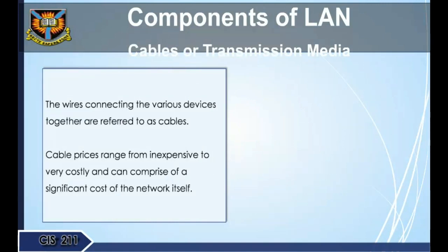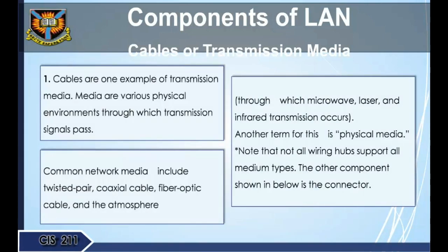The wires connecting the various devices together are referred to as cables. Cable prices range from inexpensive to very costly and can comprise a significant cost of the network. Cables are one example of transmission media — the physical environments through which transmission signals pass. Common network media include twisted pair, coaxial cable, fiber optic cable, and the atmosphere through which microwave, laser, and infrared transmissions occur. Note that not all wiring hubs support all medium types.